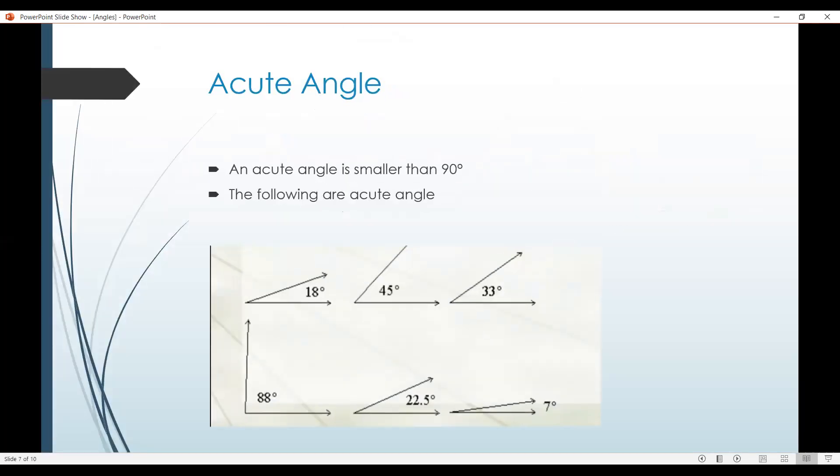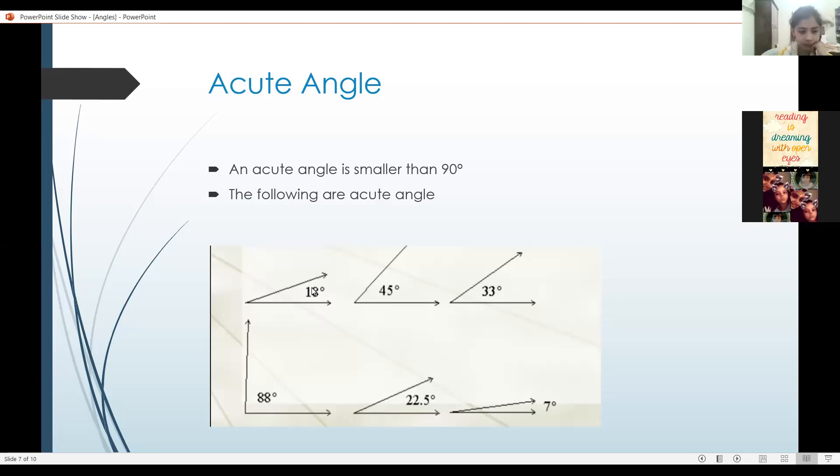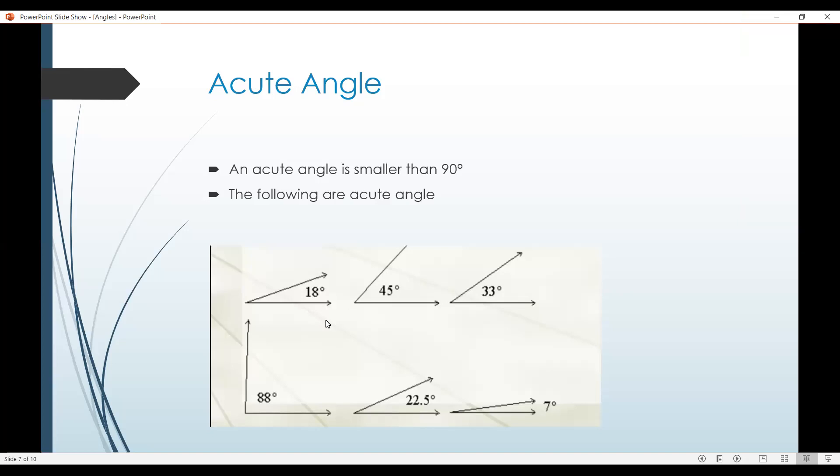Now an acute angle. An acute angle is smaller than 90 degrees. The following are acute angles. Like this one, it's less than 90 degrees. So it's an acute angle. All of them are acute angles.